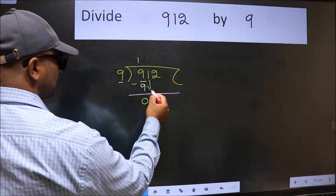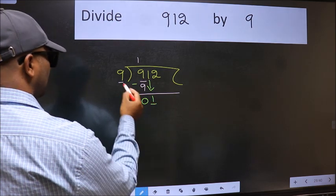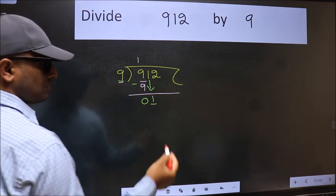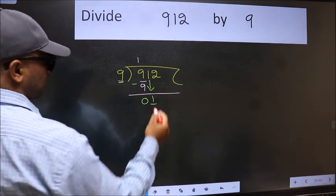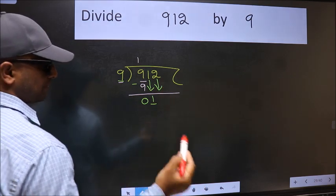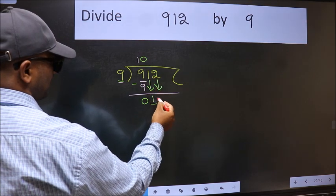After this, bring down the beside number 1 down. Now here we have 1 and here 9. 1 is smaller than 9, so we should bring down the second number. And the rule to bring down the second number is we should put 0 here. Then only we can bring this number down.